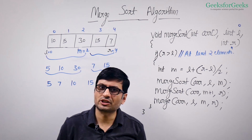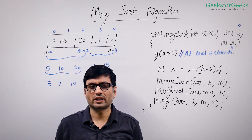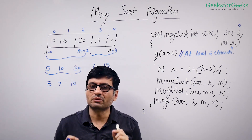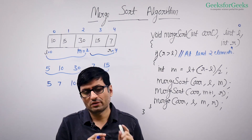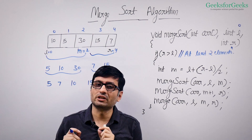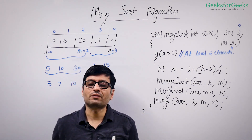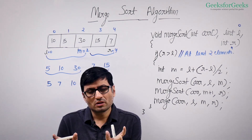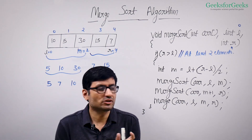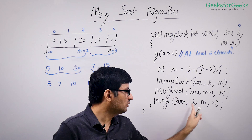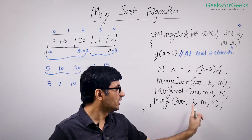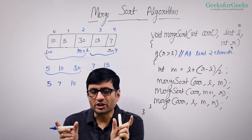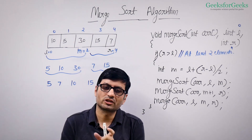So what we do in merge sort: we first check if there are at least 2 elements. If there is 1 element, there is no point sorting. After checking this, we find the midpoint. After finding the midpoint, we recursively sort elements from low to mid, and then we recursively sort elements from mid plus 1 to R. After sorting these two halves, we merge these two halves. The merge function takes two sorted arrays — two sorted halves of your input — and considers the sorted array from L to M and the other sorted array from M plus 1 to R, then merges them into one sorted array.